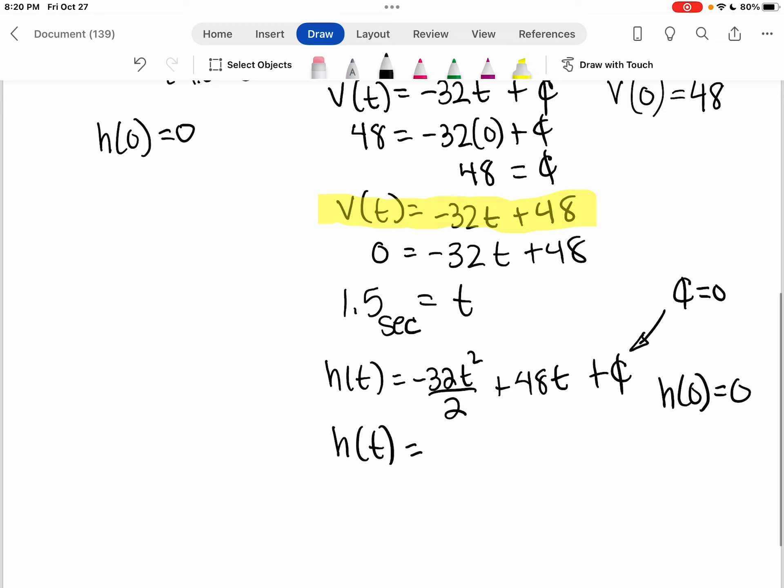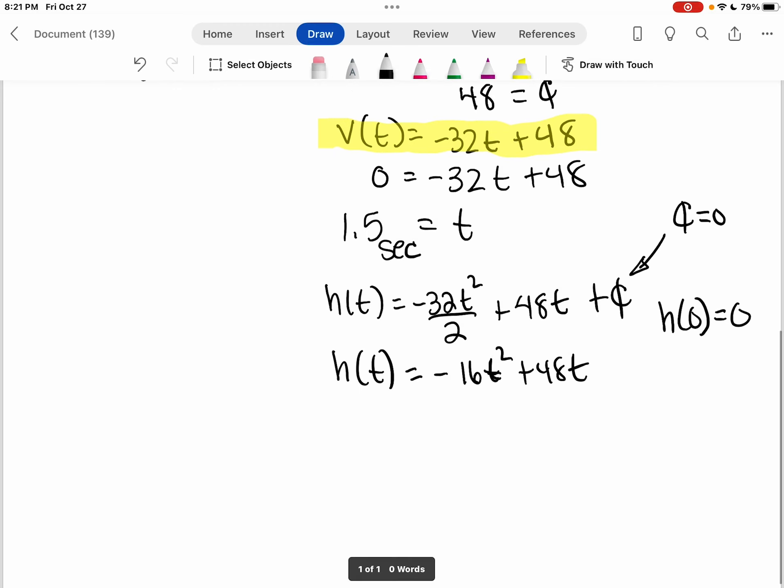So our height function is going to be negative 32T squared over two, which actually, let's simplify that as negative 16T squared plus 48T.